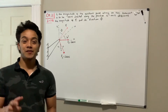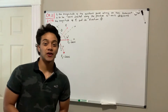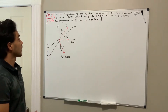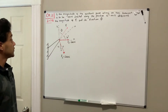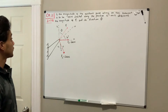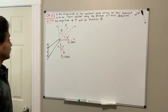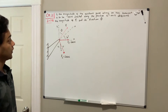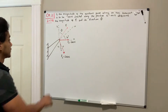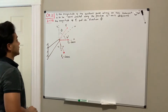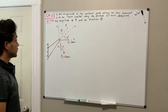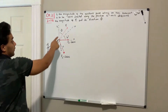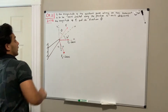Welcome back everyone to Learning by Teaching. We're in statics, we're gonna do problem 0.2.56. It says if the magnitude of the resultant force acting on the bracket is to be 450 newtons directed along the positive u axis, determine the magnitude of F1, this guy, and its direction and its angle.